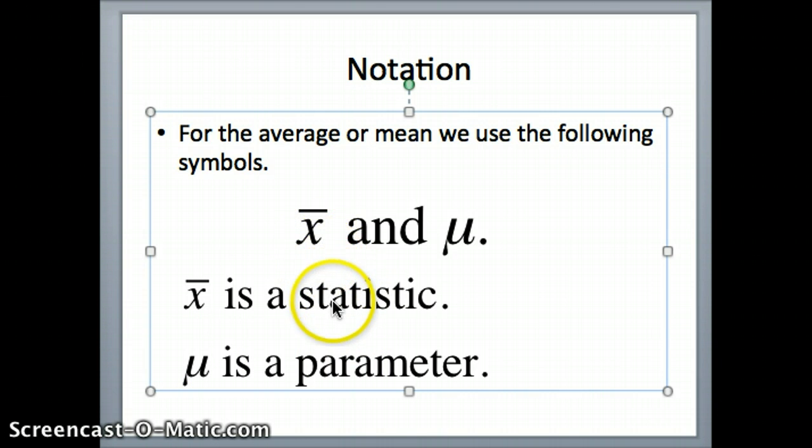x-bar is a statistic. So it represents the average of a relatively small sample, hopefully randomly chosen. Mu is a parameter. So it represents the average of the entire population, oftentimes millions of individuals. So constructing x-bar is much simpler than constructing mu.